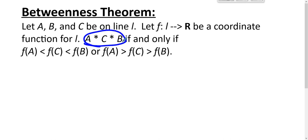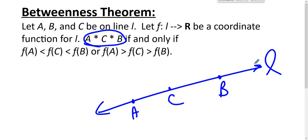We say that A then C then B, or really C is between A and B, if and only if the coordinates go up or the coordinates go down. So you have some line, you have three points on the line and there's some coordinate function, some bijection that applies to this line.